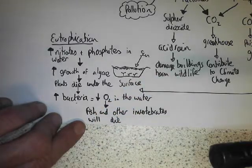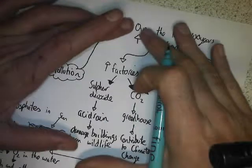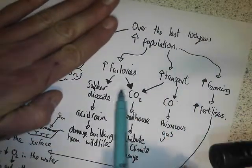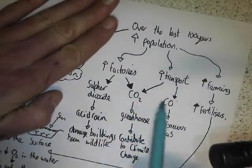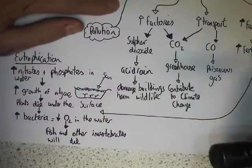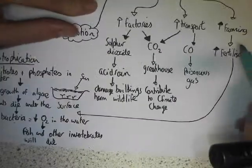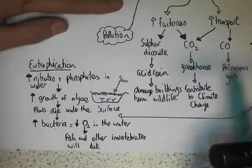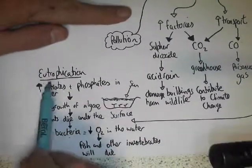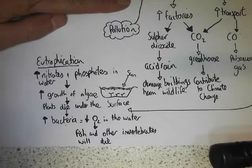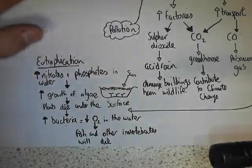So, to summarise: increased population leads to different polluting compounds — and in more detail, the effects of fertilisers through the process of eutrophication. Thank you for listening — that was pollution.